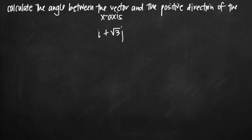Today we're going to be talking about how to calculate the angle between a vector and the positive direction of the x-axis. In this particular problem, we've been given the vector represented by the equation i plus the square root of 3 times j. This equation represents our vector and we need to calculate the angle between this vector and the positive direction of the x-axis.